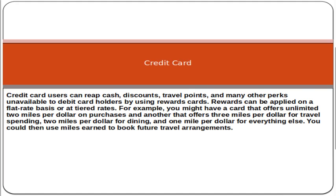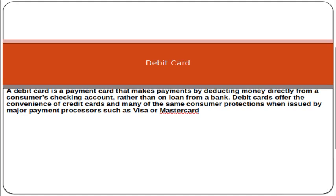The other type of card is the debit card. A debit card is a payment card that makes payments by deducting money directly from a consumer's bank account, rather than borrowing on loan from a bank. Debit cards offer the convenience of a credit card and many of the same consumer protections when issued by major payment processors such as Visa or Mastercard.